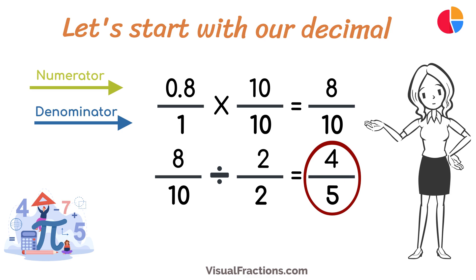And there you have it. The decimal 0.8 when converted to a fraction equals 4 fifths. This fraction is in its simplest form and cannot be further simplified.